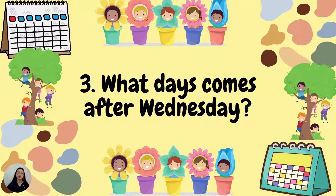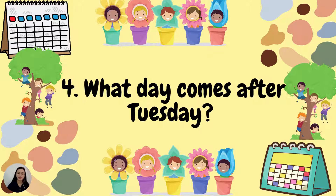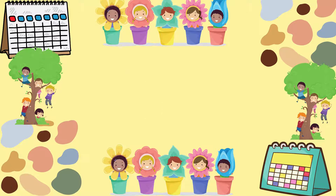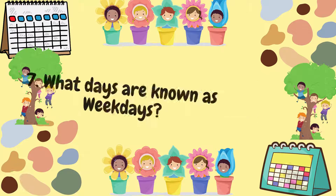Three, what day comes after Wednesday? Yes, it's Thursday. Number four, what day comes after Tuesday? Very good! It's Wednesday. Number five, what day comes after Monday? You're right! It's Tuesday. Number six, what days are known as the weekends? Correct! It's Sunday and Saturday.